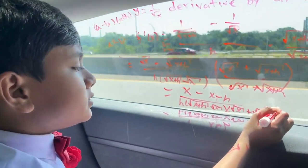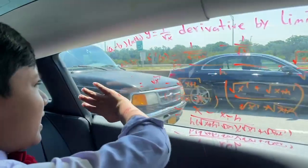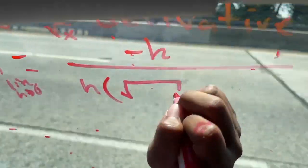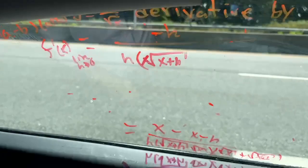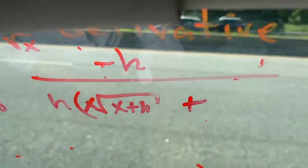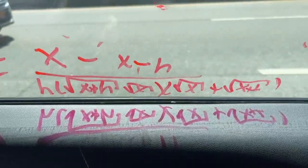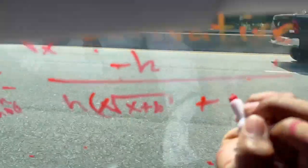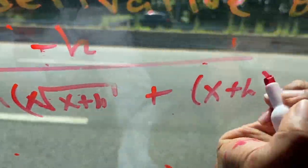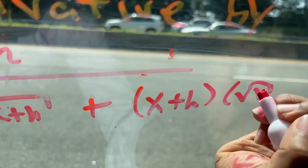Alright, so since we ran out of space, let's erase the root of x plus h times x. And then we're going to multiply this, the square root of x plus h times the square root of x by the square root of x plus h, which gives us the square root of x plus h times the square root of x.